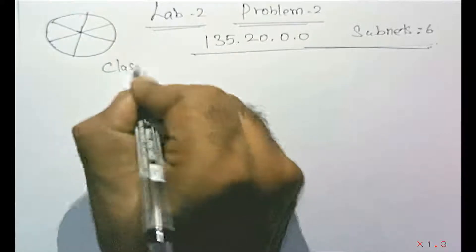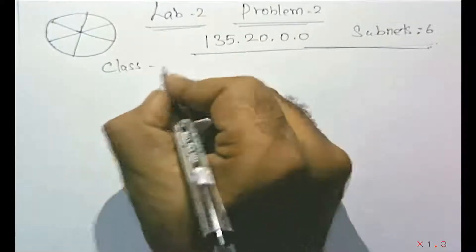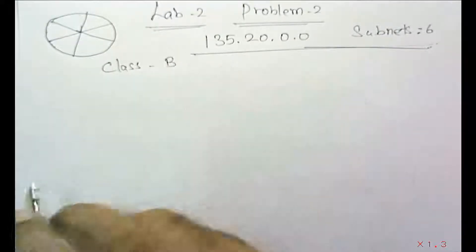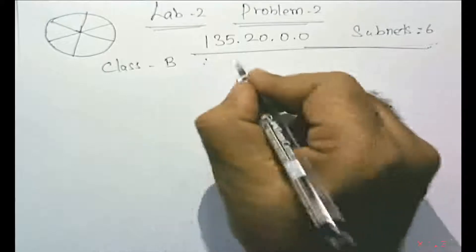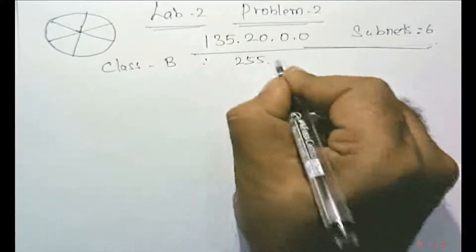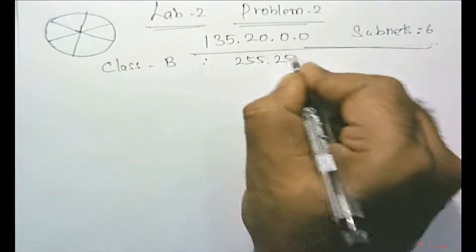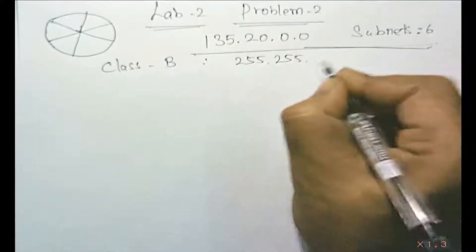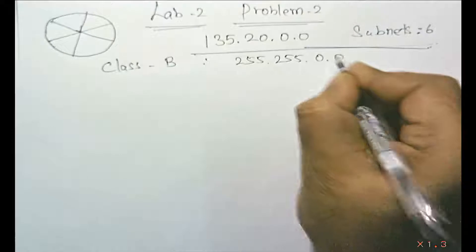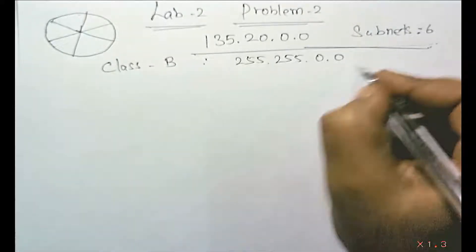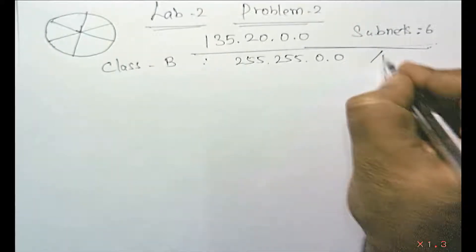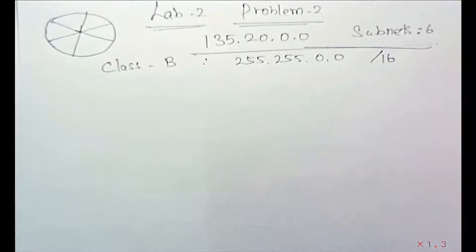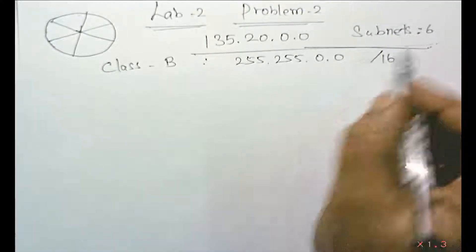Since this is Class B, the default subnet mask for Class B is 255.255.0.0. The CIDR value is /16.